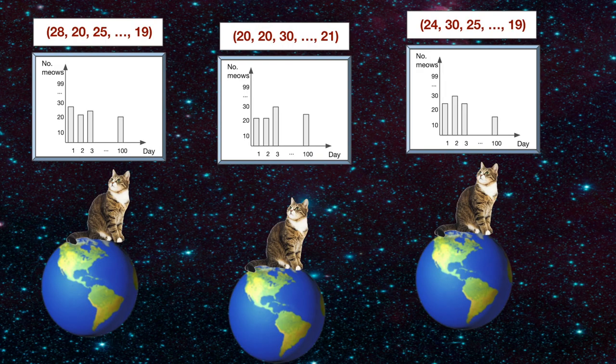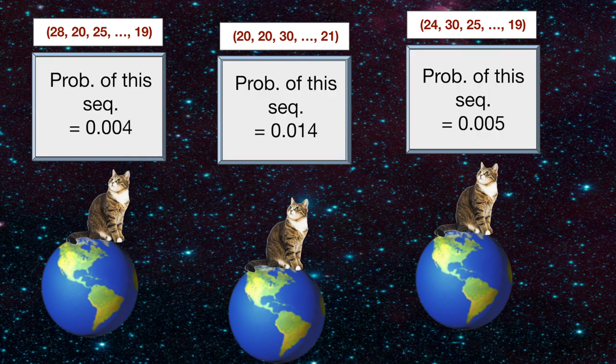Alright, then how do we define typical set, and how can Ashley figure out which sequences are in it? Let's go back to our parallel universes. For any possible sequence, we can assign a likelihood of it happening, by assuming independence of Ella's behaviors across days.